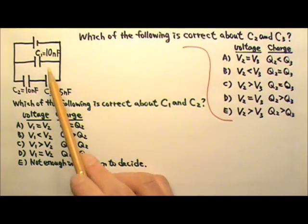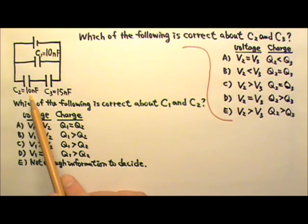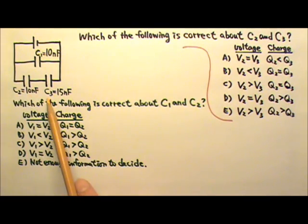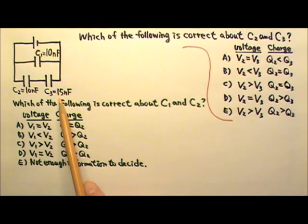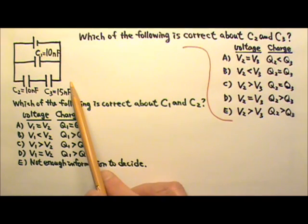Three capacitors, C1 equals 10 nF, C2 equals 10 nF, C3 equals 15 nF. They are connected to a battery as shown in this circuit diagram.